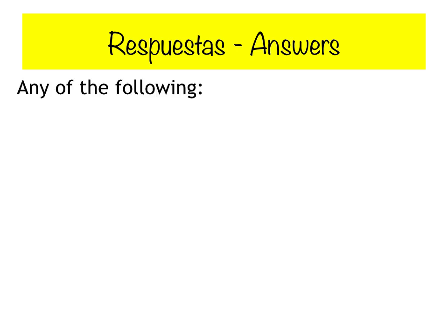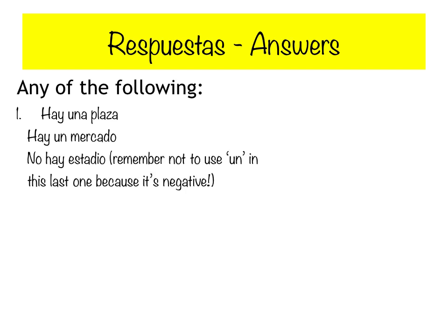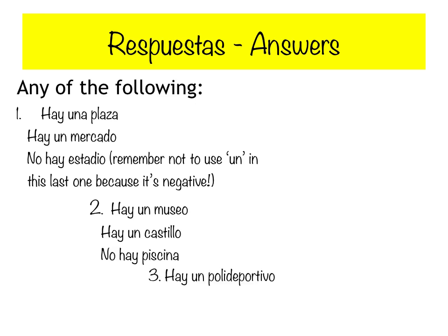Now, las respuestas — the answers. For box one: hay una plaza (there is a town square), hay un mercado (there is a market), and no hay estadio (there is no stadium) — remember, no un before estadio because it's negative. For box two: hay un museo, hay un castillo, and no hay piscina — there is no swimming pool. For box three: hay un polideportivo (there is a sports centre), hay un restaurante (there is a restaurant), and no hay parque — there is no park. Well done!